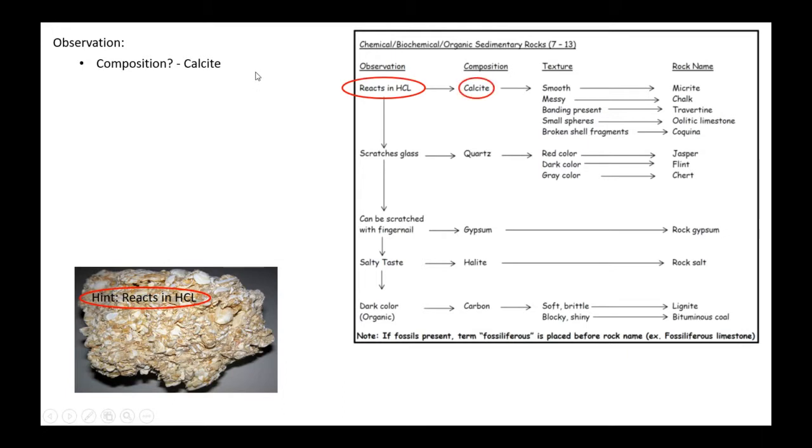When you have calcite as the main mineral composition, we are dealing with some type of limestone. There are several types of limestone here in the flow chart.